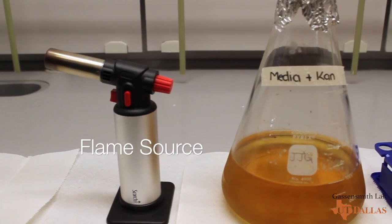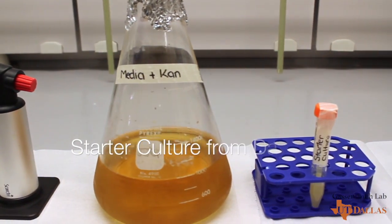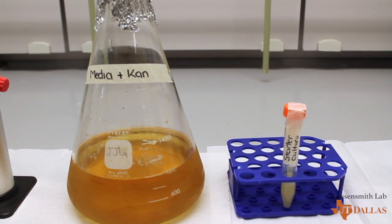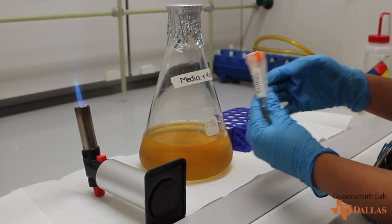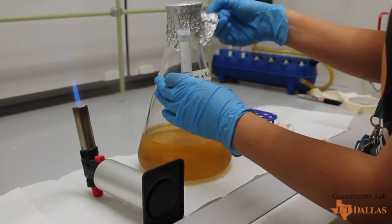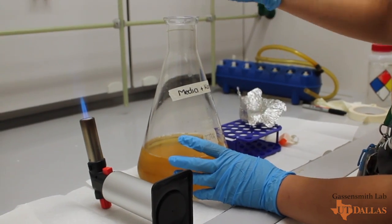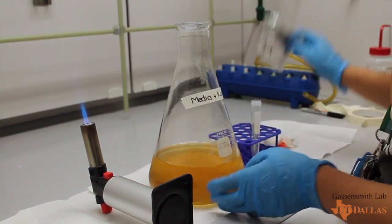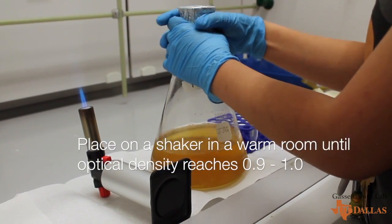The next day, you'll need a flame source, your media from yesterday, and the starter culture from the warm room. Add your starter culture to the media in order to inoculate it. Then place the media in a shaker in a warm room for about 4-5 hours until the optical density reaches 0.9 to 1.0.